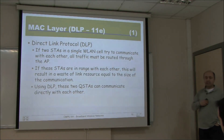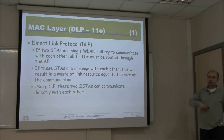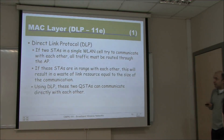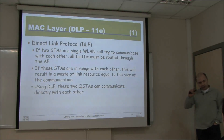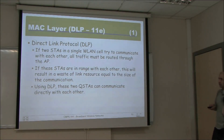802.11e also introduces the Direct Link Protocol (DLP). Normally, when two stations in the same cell communicate, all traffic goes through the access point — uplink then downlink — causing twice the necessary traffic. If the two stations are within range of each other, they could communicate directly rather than wasting those resources. Using DLP, this direct communication becomes possible.